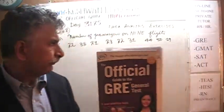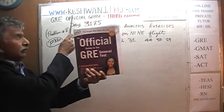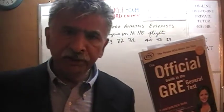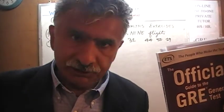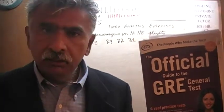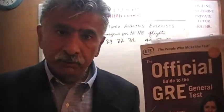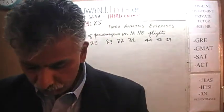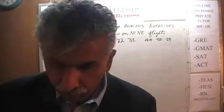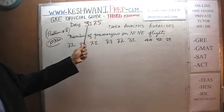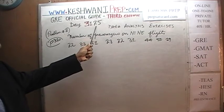Hello, my name is Keshwani — that's K-E-S-H-W-A-N-I. We are here because we want to prepare for the GRE. We have been solving math problems out of this book, the Official Guide to the GRE, third edition. If you do not own this book already, purchase one immediately. Today is our lesson number one hundred and twenty-five — day three thousand one hundred and twenty-five, where the three signifies the third edition.